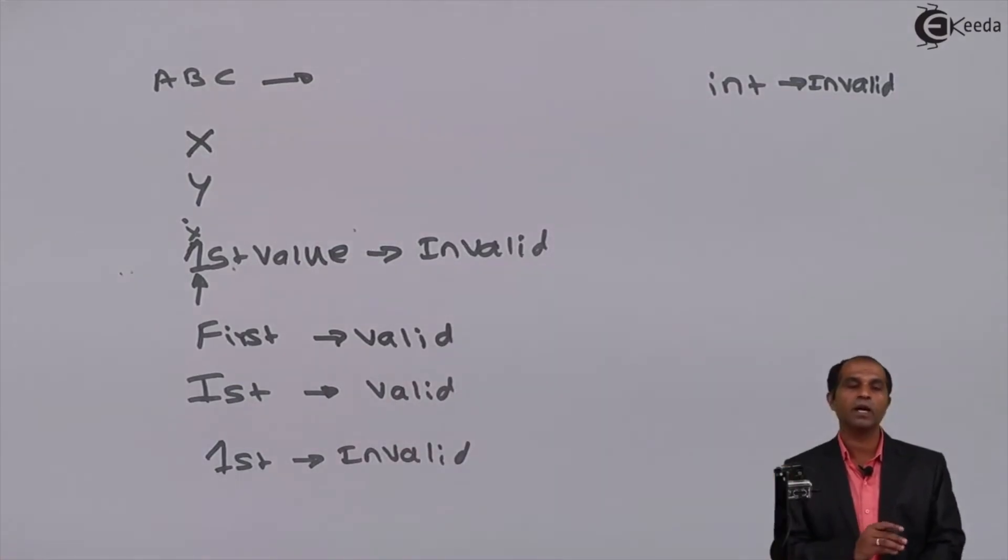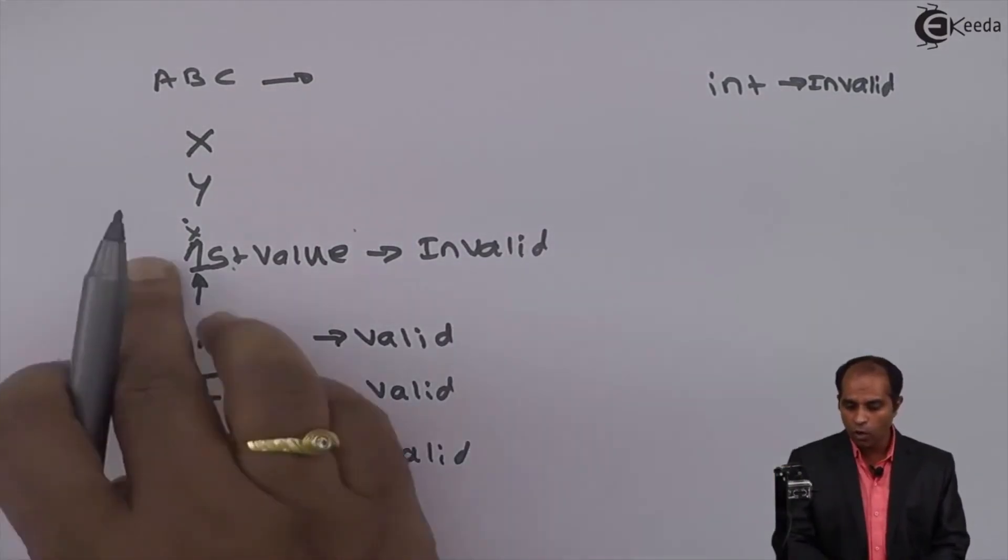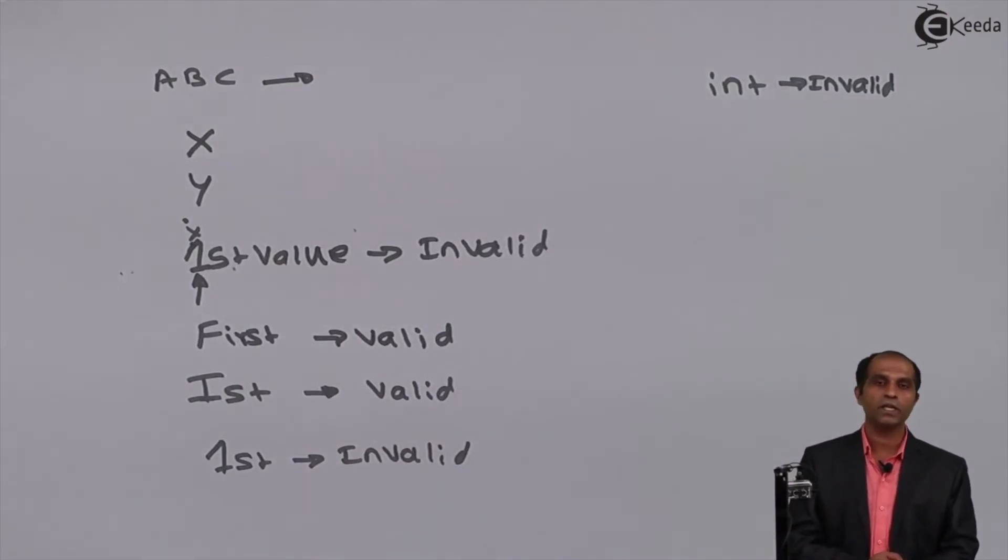Basically, all that I've identified as valid are called identifiers because they represent some value, some quantity, or a name for a module. All these rules are supposed to be filtered for every example we write: whether it's a variable, whether it starts with an alphabet or not.